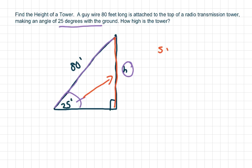So sine of theta equals opposite over hypotenuse. So sine of 25 degrees equals height over 80.